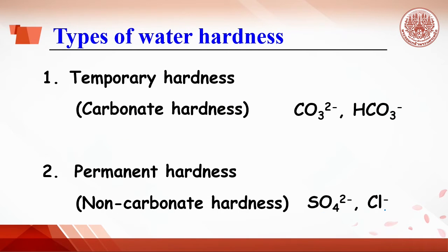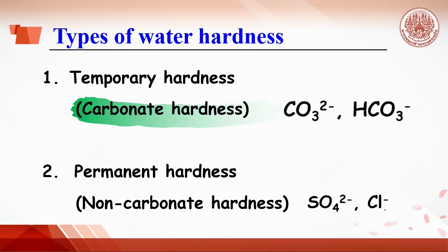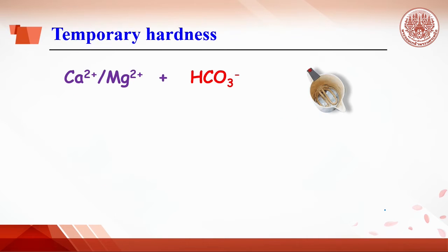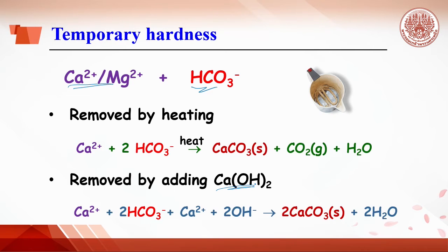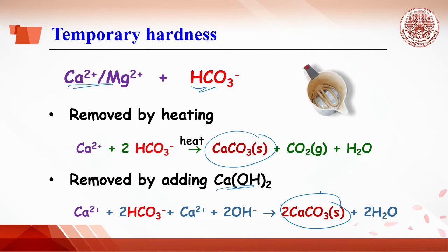Temporary hardness and permanent hardness, also called carbonate hardness and non-carbonate hardness. Temporary hardness is due to the presence of bicarbonate ions together with calcium and magnesium ions. This type of hardness can be removed by either heating or adding calcium hydroxide, leading to a precipitation reaction of calcium carbonate. A simple example of temporary hardness is the deposition of calcium carbonate scale inside a kettle.